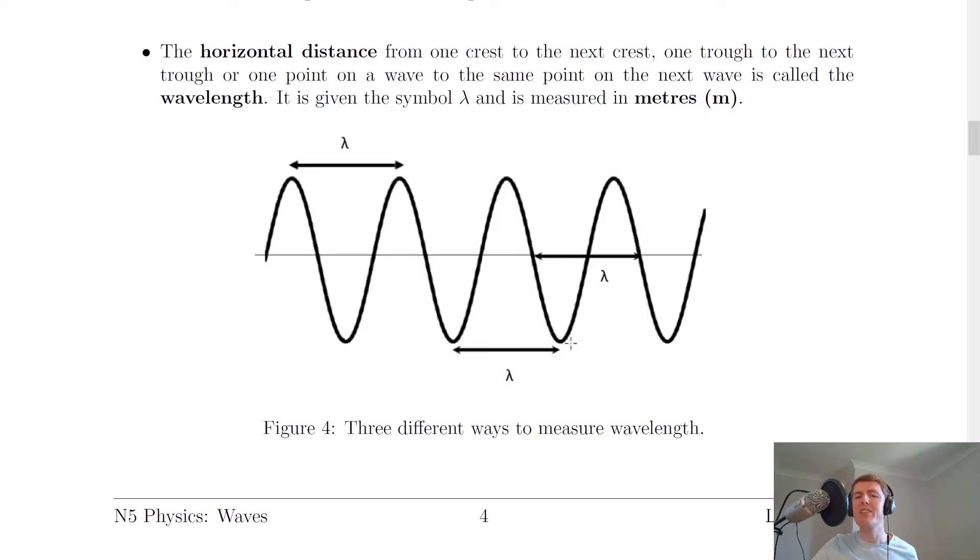But if we want to define wavelength in more general terms, then we can do that by saying that it's the horizontal distance from one point on a wave to the same point on the next wave. So what we mean by that is, for example, if I was to choose this point here and then go to the same point on the next wave, well I need to go all the way down, all the way back up, and back to the start. And that is me now one wave along. So that is one wavelength in distance.